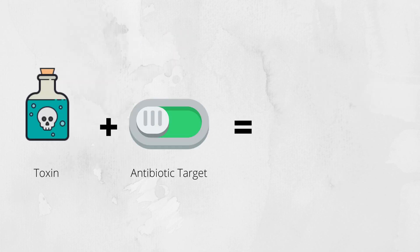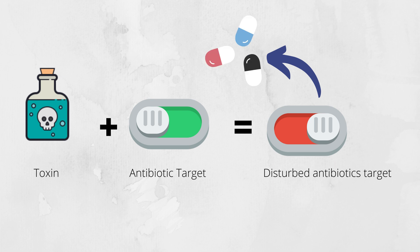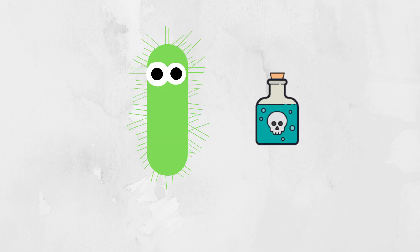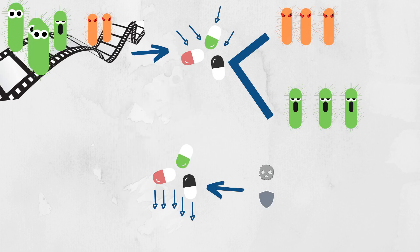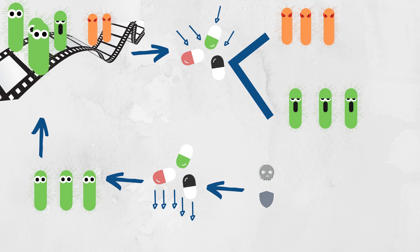In toxin-antitoxin pairs, the role of toxin is to disturb the antibiotic target within the cell, and the role of antitoxin is to protect the cell from the toxicity. So these cells are known as antibiotic-tolerant. When antibiotics' level drops, these cells become active and again repopulate the biofilms.